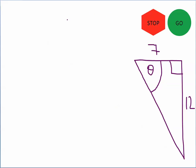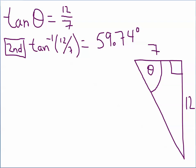All right, click on the stop sign and see if you can find theta. All right, let's see how you did. We're looking for the opposite divided by the adjacent — that's the tangent function. The tangent of theta equals 12 divided by 7. Using the second key to find the inverse tangent of 12/7, theta is equal to 59.74 degrees.